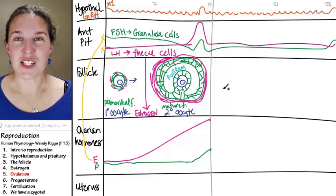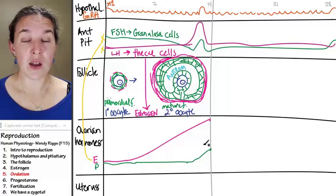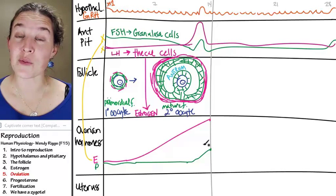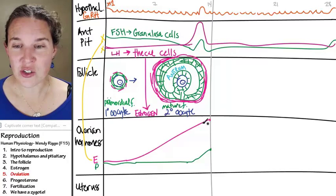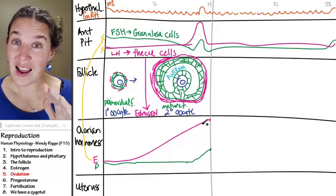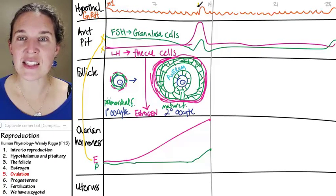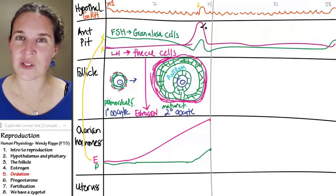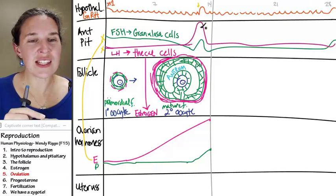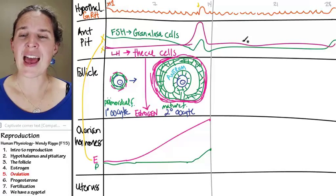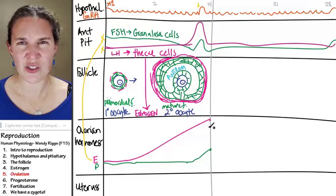Well, estrogen reaches this point where it actually has an effect on gonadotropin-releasing hormone. The estrogen level gets so high that it causes a surge in gonadotropin-releasing hormone. So you get this little burst before ovulation as a result of these really high estrogen levels.